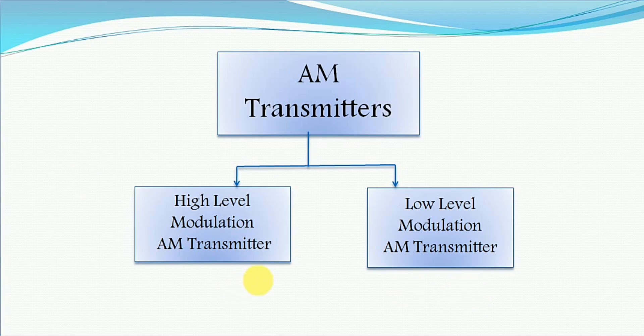High level modulation AM transmitter means the power level at which the modulation takes place is high — we call it a high level AM modulation transmitter. Similarly, the low level modulation AM transmitter is one where the power level at which the modulation takes place is low — we call it a low level modulation AM transmitter.